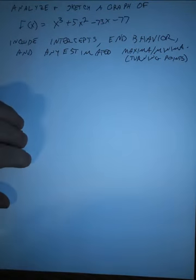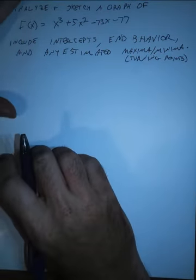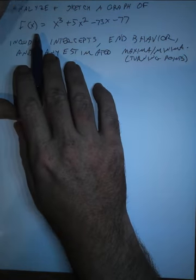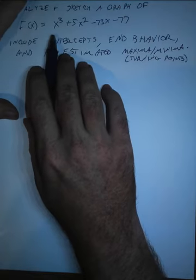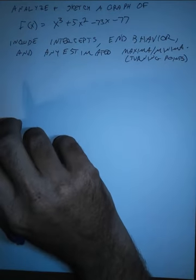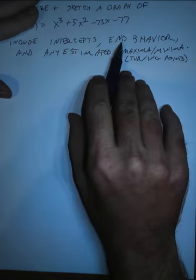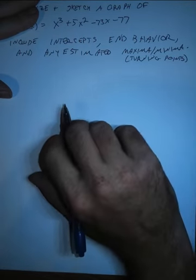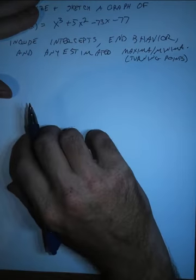All right, I've had a request to do an example of how to analyze and sketch the graph of a polynomial. So this asks us to do that for this particular polynomial, x cubed plus 5x squared minus 73x minus 77. When we do this for polynomials, we need to include the intercepts, end behavior, any estimated maxima or minima.